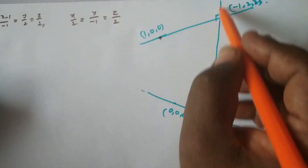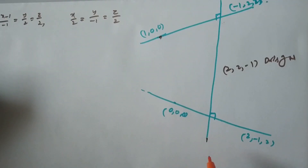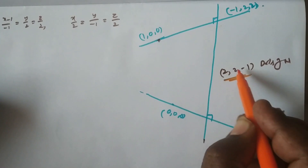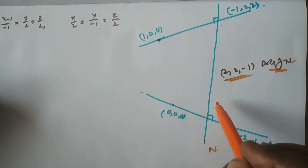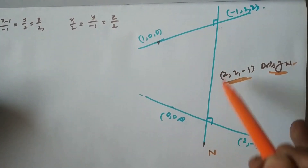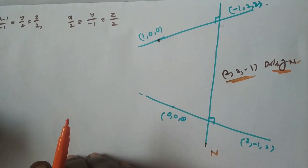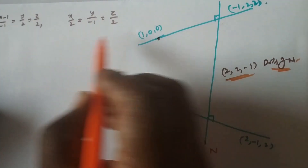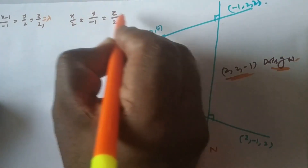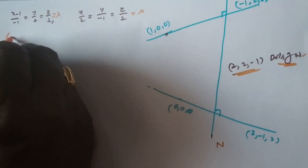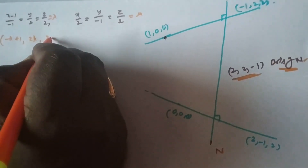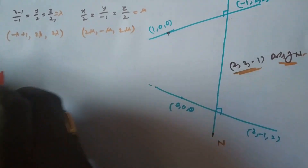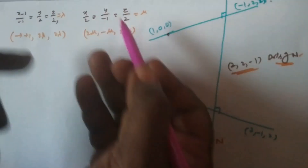Now we have to find the equation of line L3 perpendicular to both lines L1 = 0 and L2 = 0, which is the normal to both lines. We already found that 2, 2, -1 are the direction ratios of the normal. Any point on the first line is (-λ+1, 2λ, 2λ) and any point on the second line is (2μ, μ, 2μ). These are the two points on the respective lines.